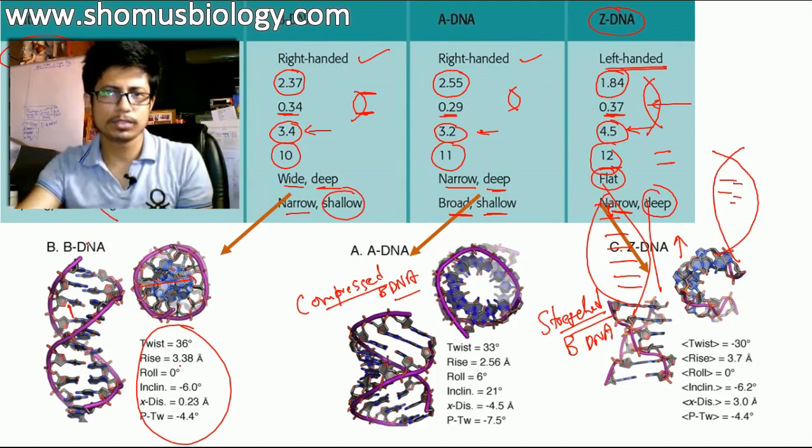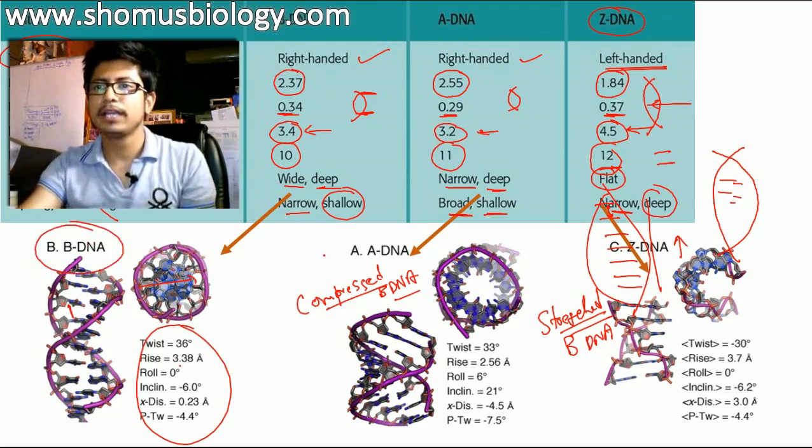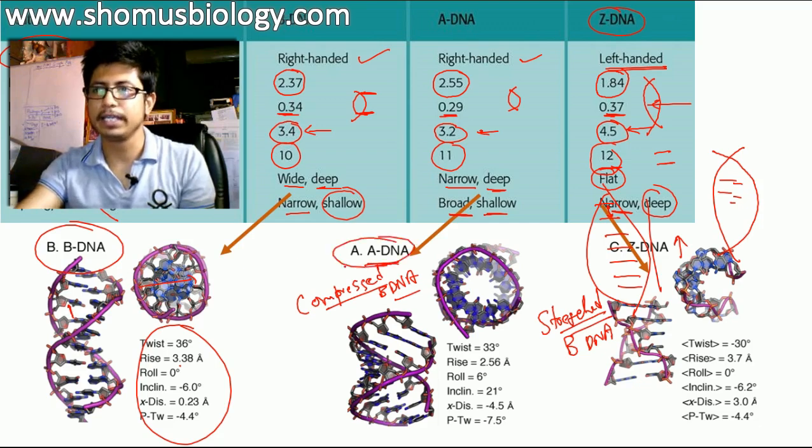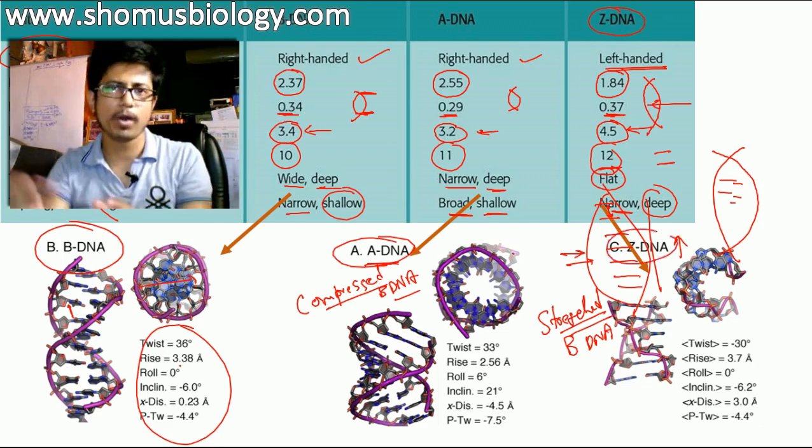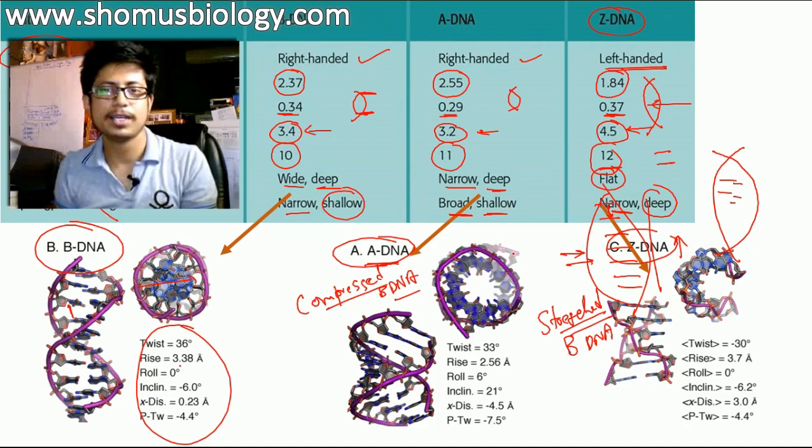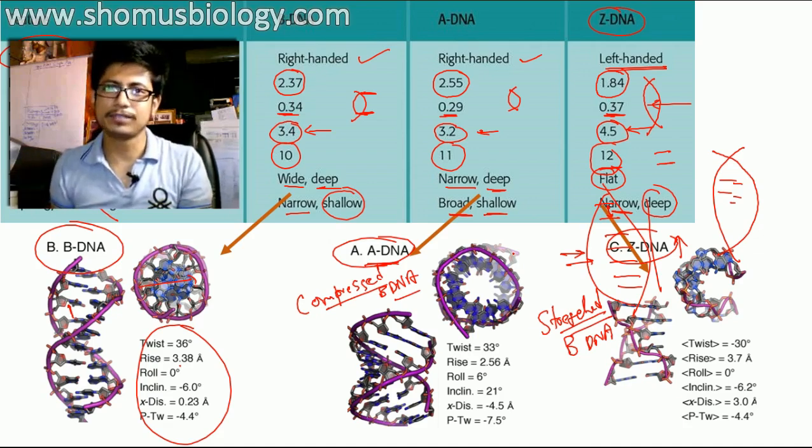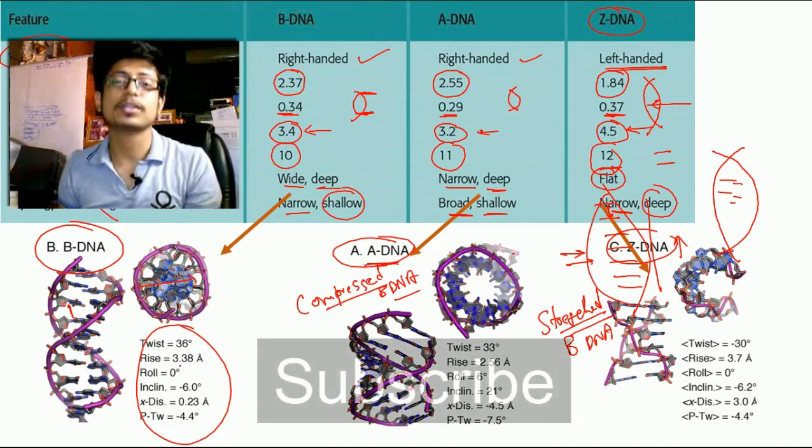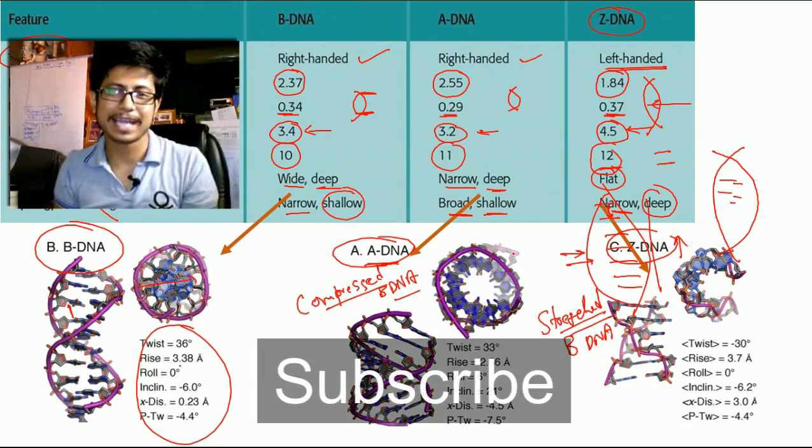Now, these structures in most of the cases, we will see the B DNA as the genetic material. In very few cases, we have A DNA, but Z DNA is very uncommon and this Z DNA might be formed due to the variations of the B DNA in some situations. So, that is the difference. If you like this video, please hit the like button, subscribe to my channel to get more videos like that and definitely share this video with your friends. Thank you.